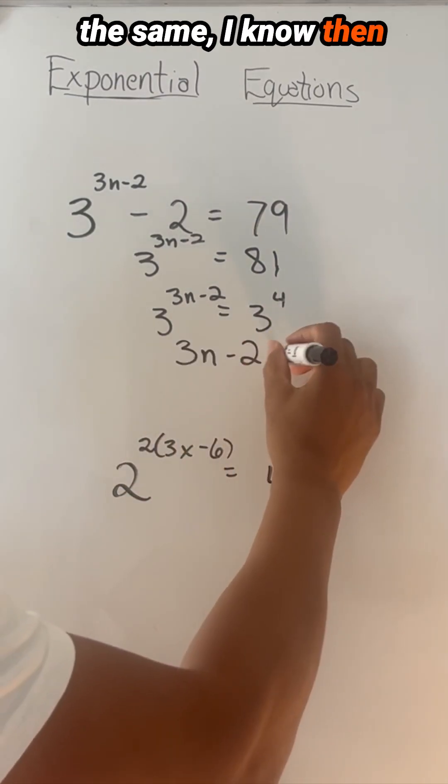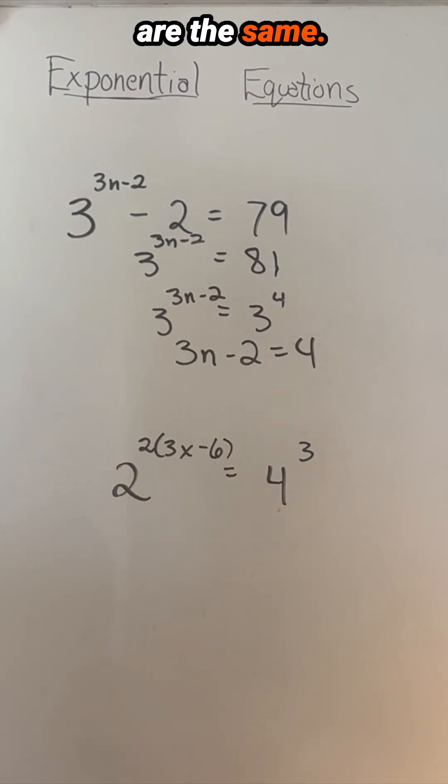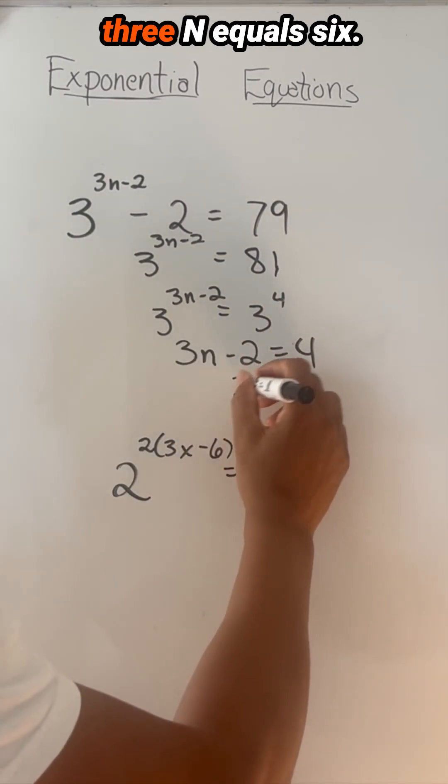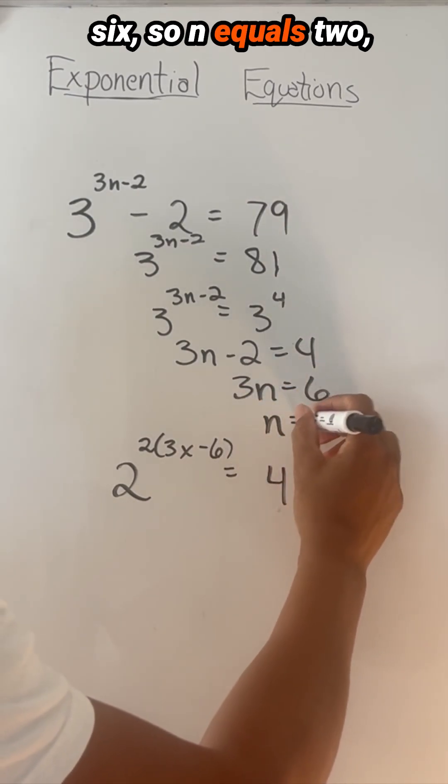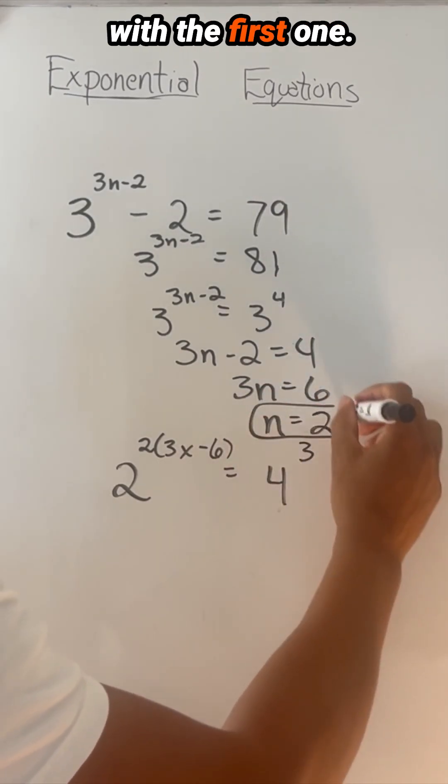Once the bases are the same, I know then that the exponents are the same. And then I'll have 3n equals 6. Two times three is six, so n equals two. And I'm finished with the first one.